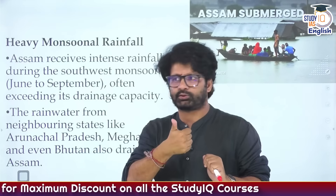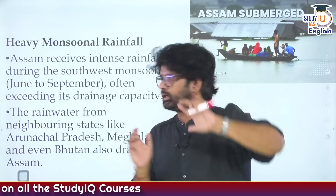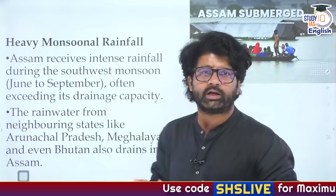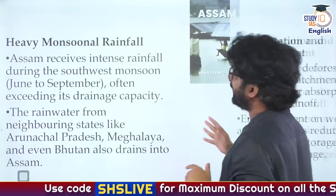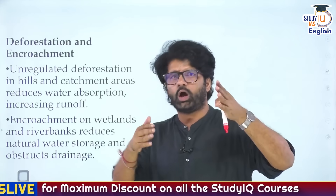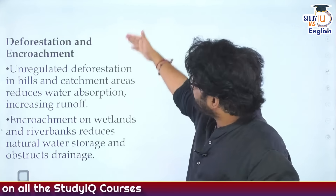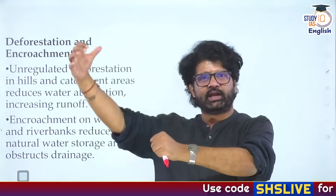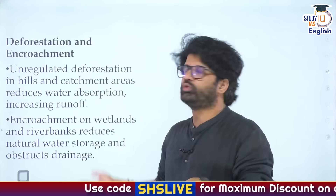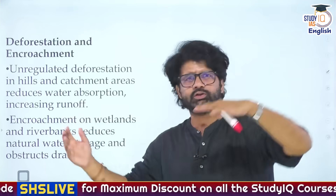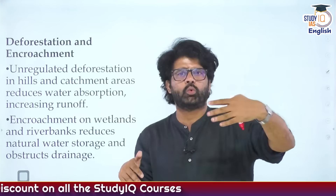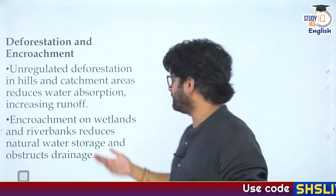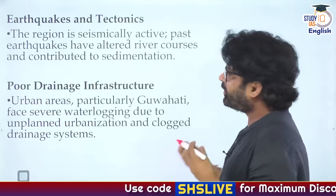Dam construction upstream also doesn't help Assam's cause. When you create a dam in the upstream region, the relatively downstream areas of Assam are impacted because dams change the course of the river, making it unpredictable. Unpredictability of the river makes it difficult to prepare for how it will be impacted by monsoon rainfall. Deforestation and encroachment are also factors - plants and trees bind the soil and hold water, but deforestation removes this resistance, facilitating the occurrence of floods.